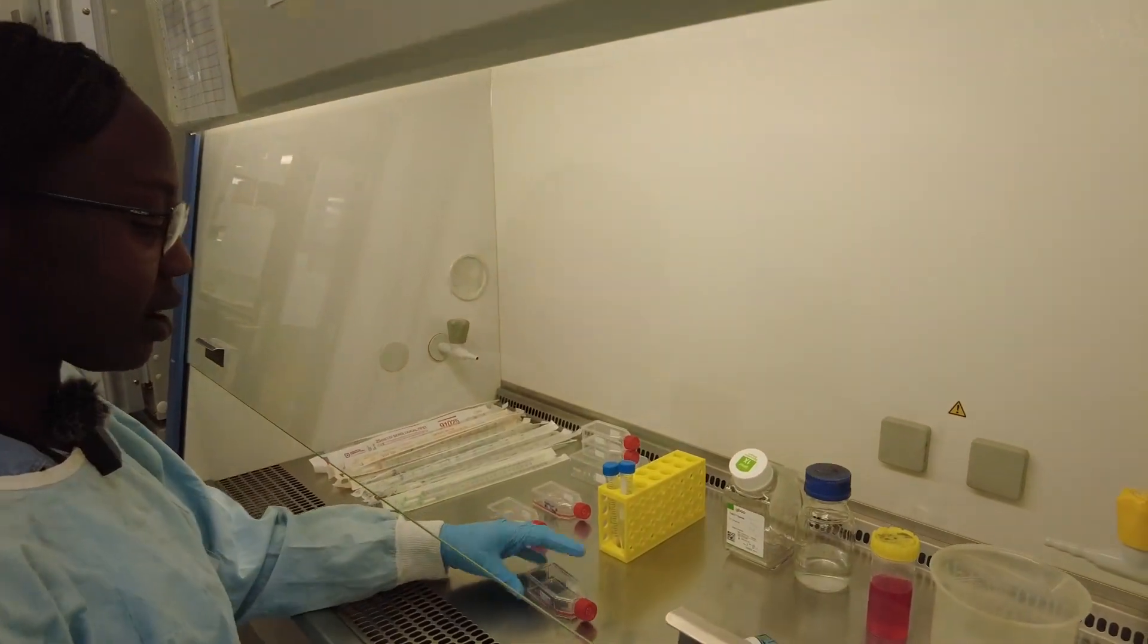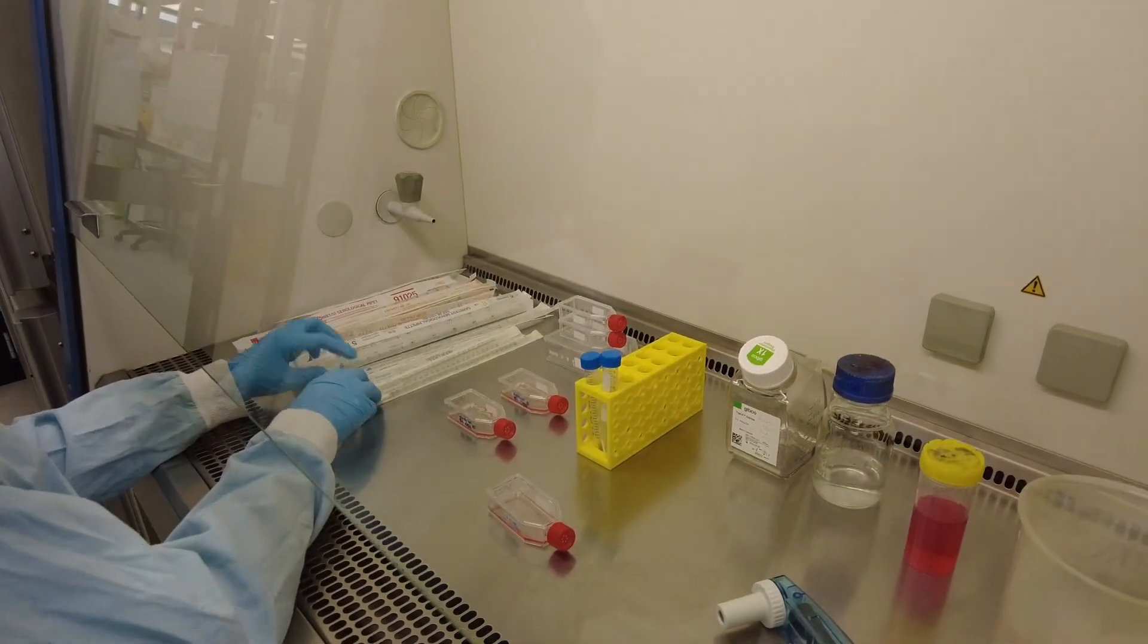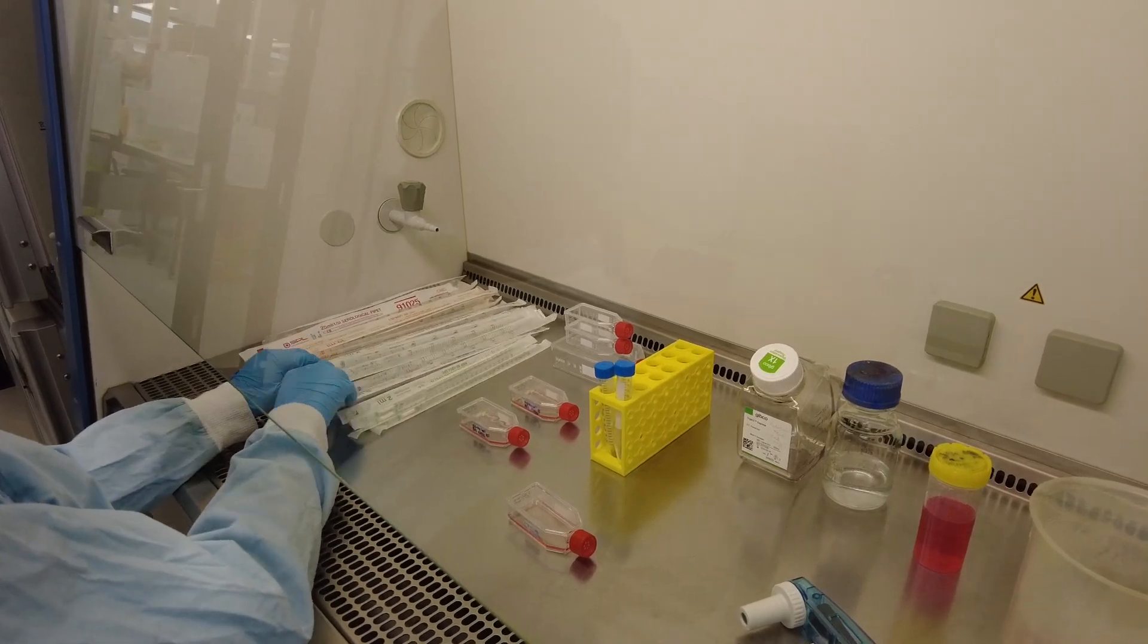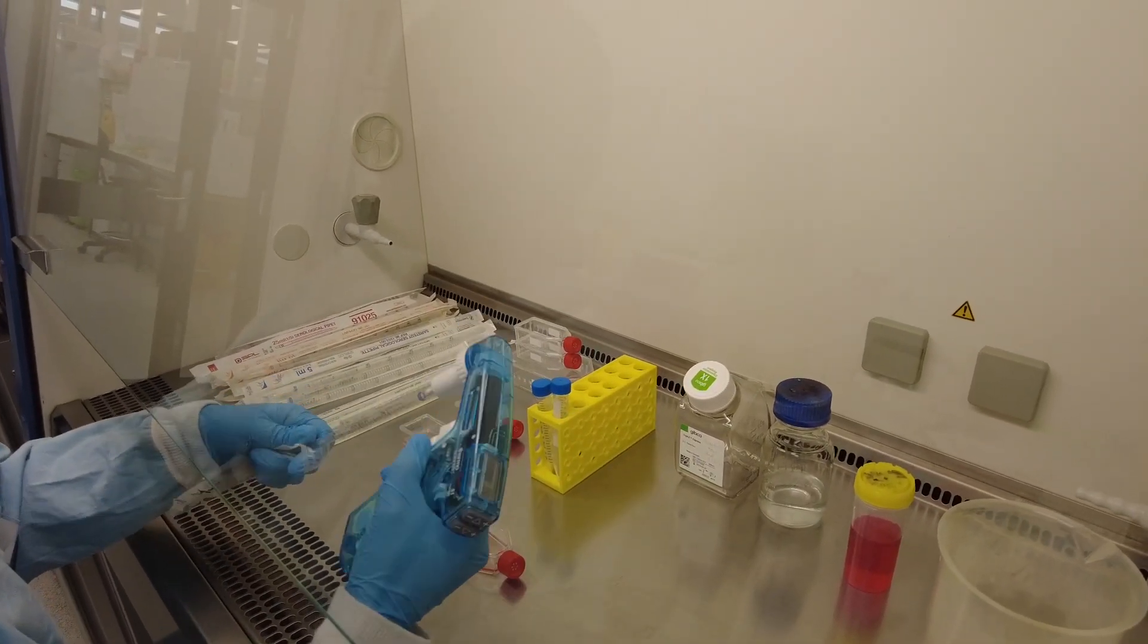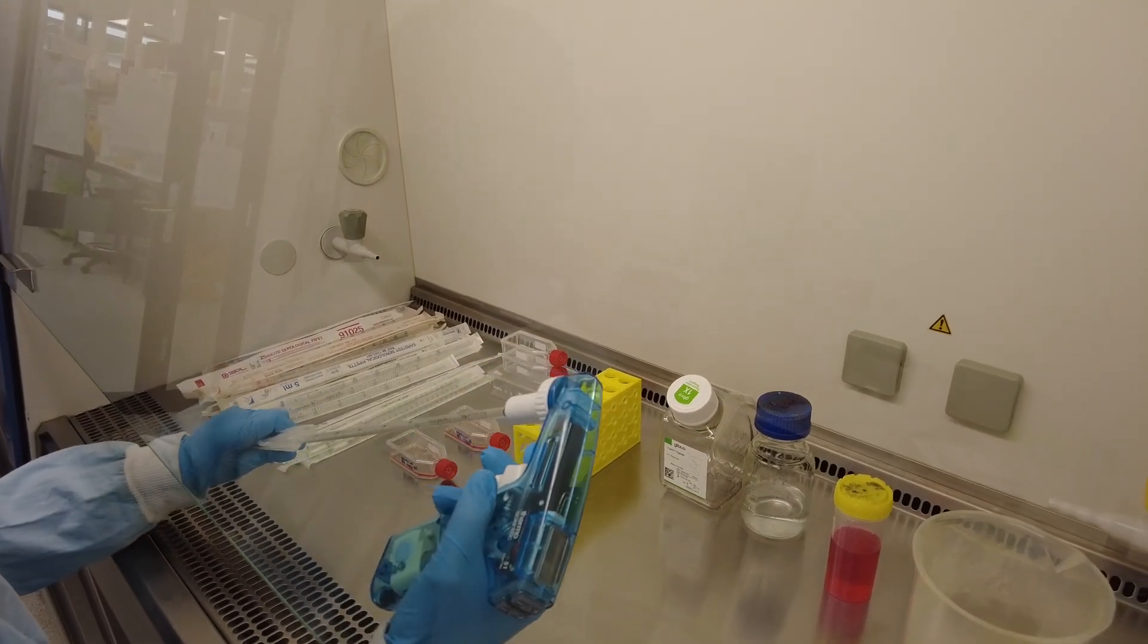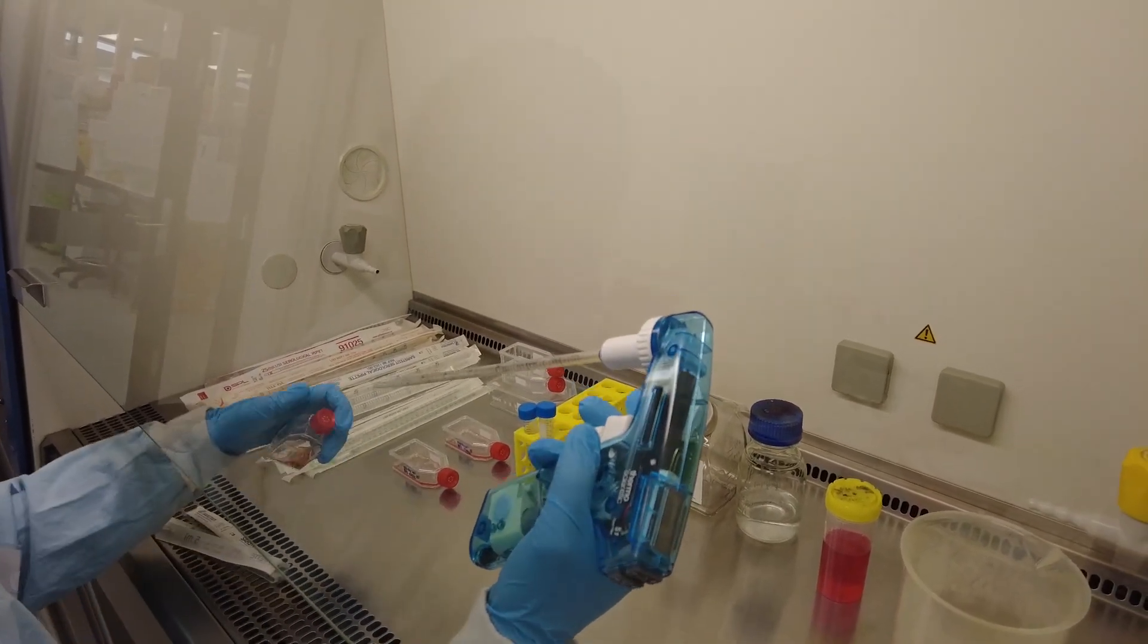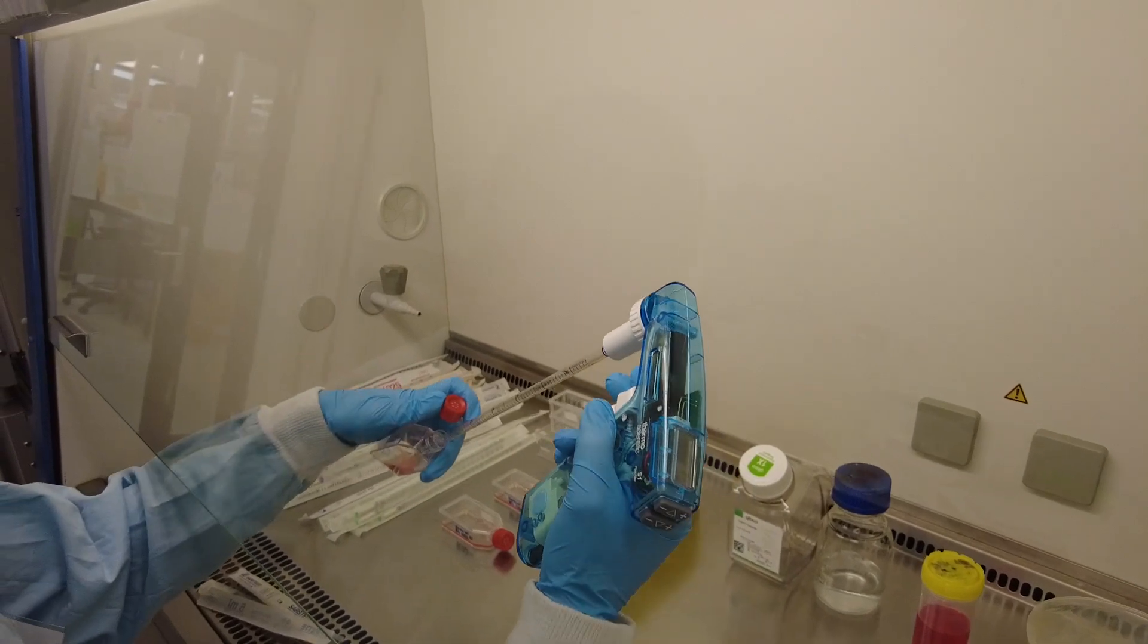So this is our backup flask, there's only a few cells in there. I'm going to remove the media and just put fresh media in there, so that's very simple. So with a 5ml pipette and the pipette gun, we're going to remove the old media.